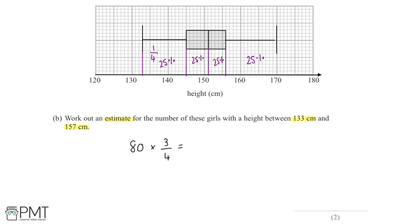That gives an answer of 60, so there are an estimated 60 girls with a height between 133 and 157 centimeters. The first mark is earned for multiplying by three-quarters or 75%, and the second mark for arriving at the correct final answer of 60.